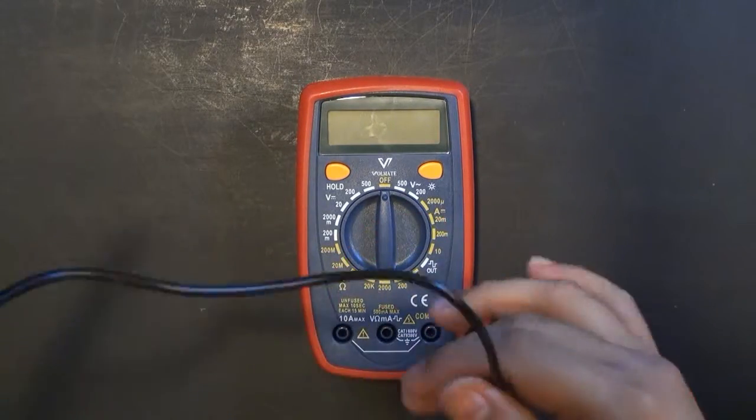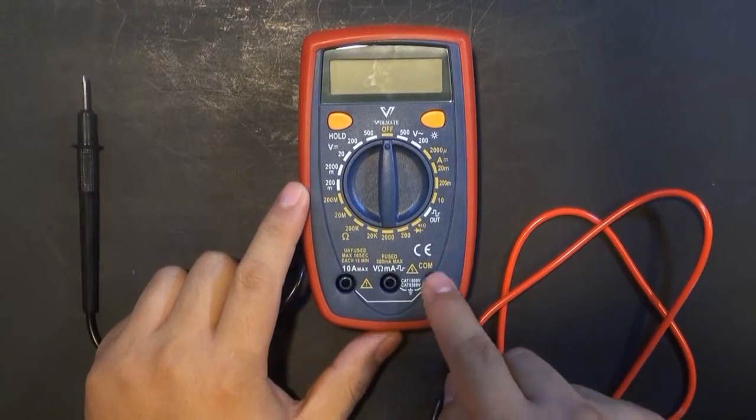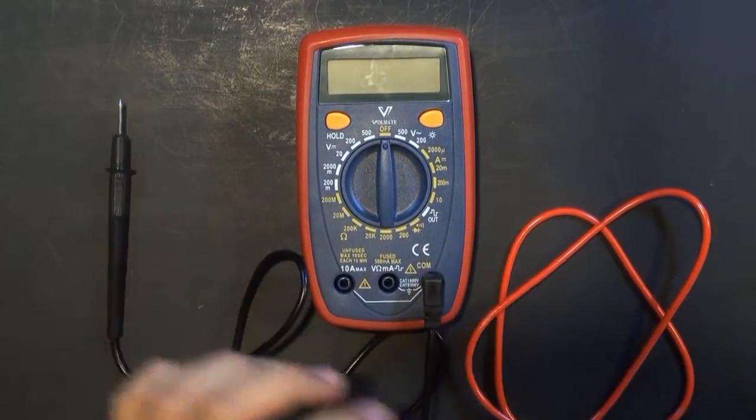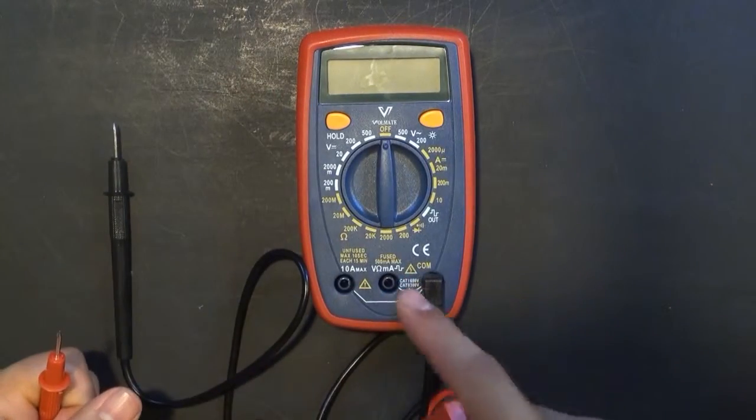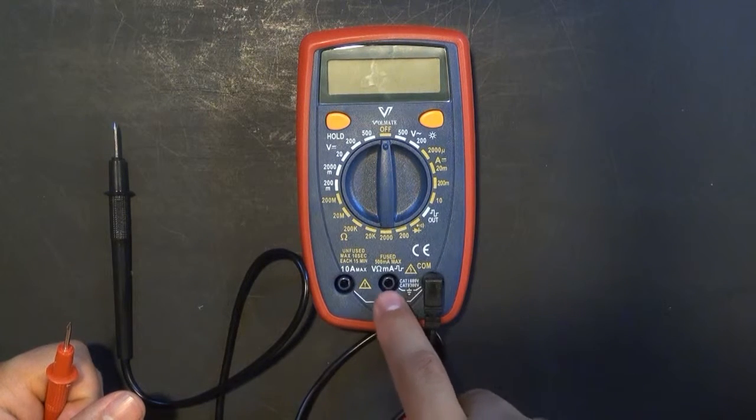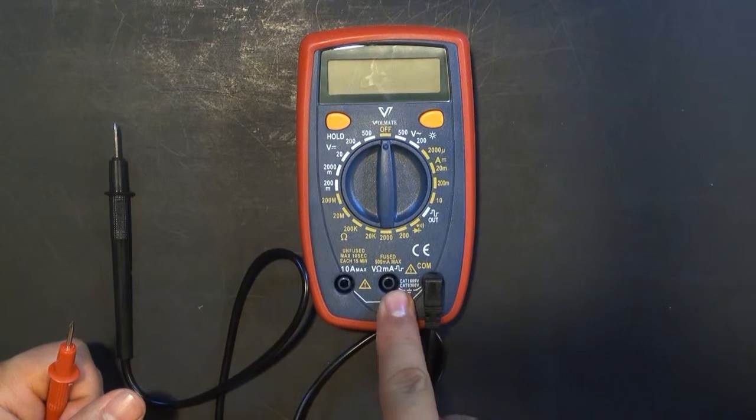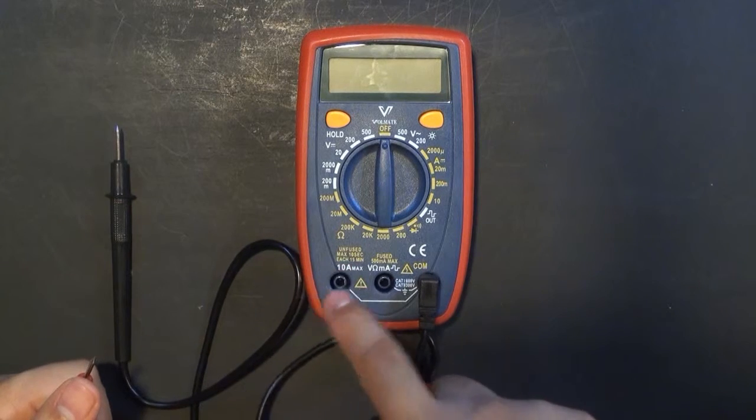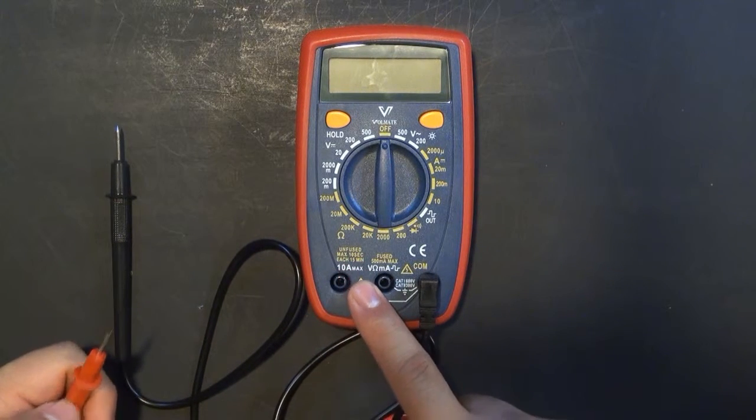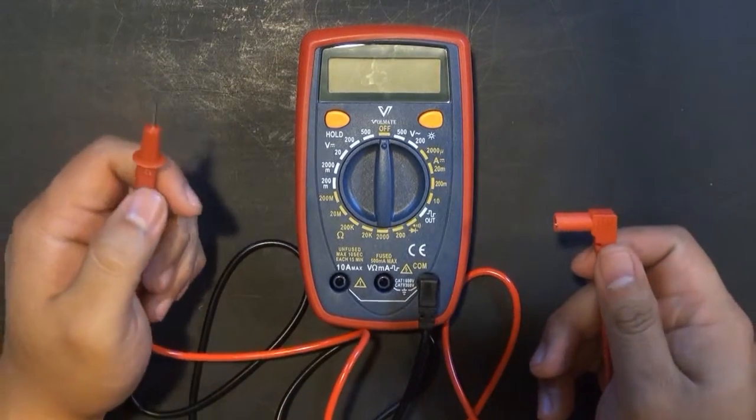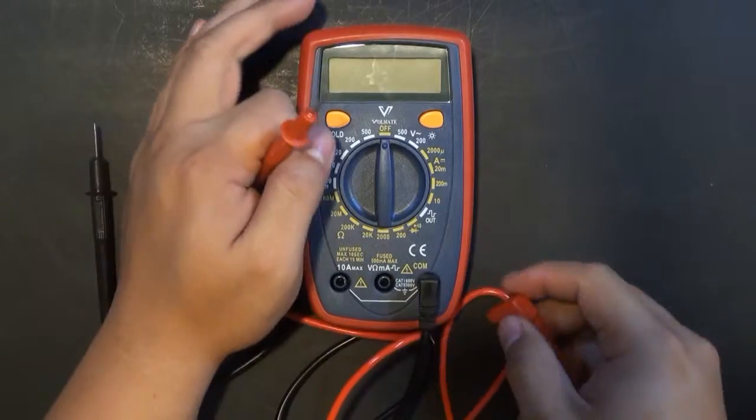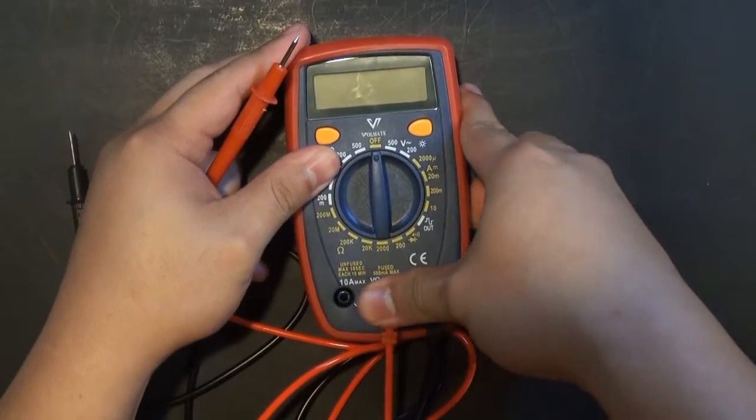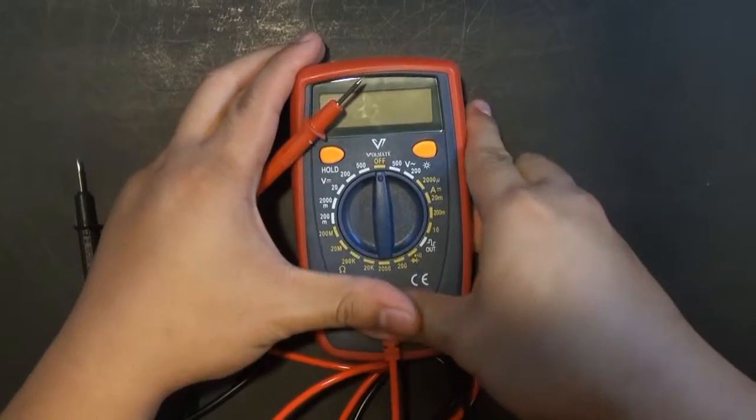The black cable always needs to go at the common slot there. Put it there, and the red probe, if you're measuring voltage, resistance, continuity, or milliampere, you can go here. But if you're using 10 amperes max, it's on this one. I'm not going to mess with this one, since I'm not sure on how to use it. Again, as I've said, I'm just using it as of now, after watching one video on YouTube. And this is the first time I actually use one. Alright, so I'm just going to put this there.